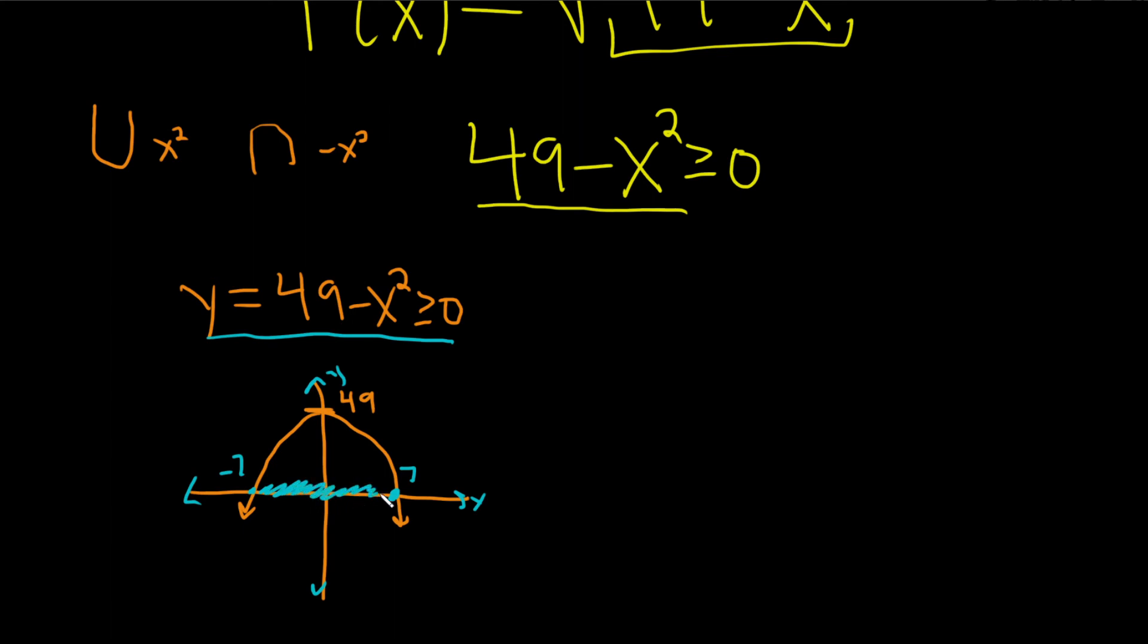And when is it equal to zero? At negative seven and seven. So the answer would be bracket negative seven comma seven. And that would be the final answer.